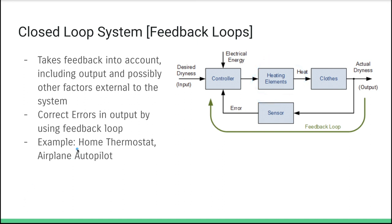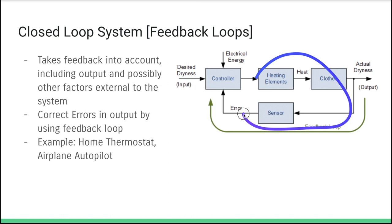Other examples of closed loop systems include a home thermostat and airplane autopilot, which constantly adjusts to keep the plane going in the right direction toward the desired destination. We give our system an initial objective, it takes action based on that, and then continues to give feedback to the controller until we've achieved what we want the system to achieve.